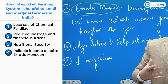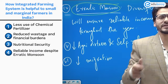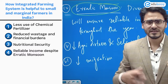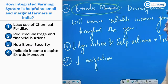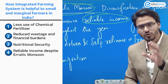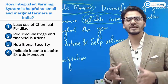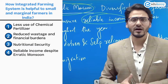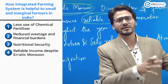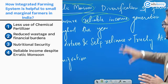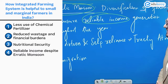Number four: resilience against erratic monsoons. Since monsoons are unpredictable and farmers are overly dependent on them, an integrated farming system ensures reliable income throughout the year. If crop production falls due to poor monsoon, the farmer can generate income from another component of the integrated system.